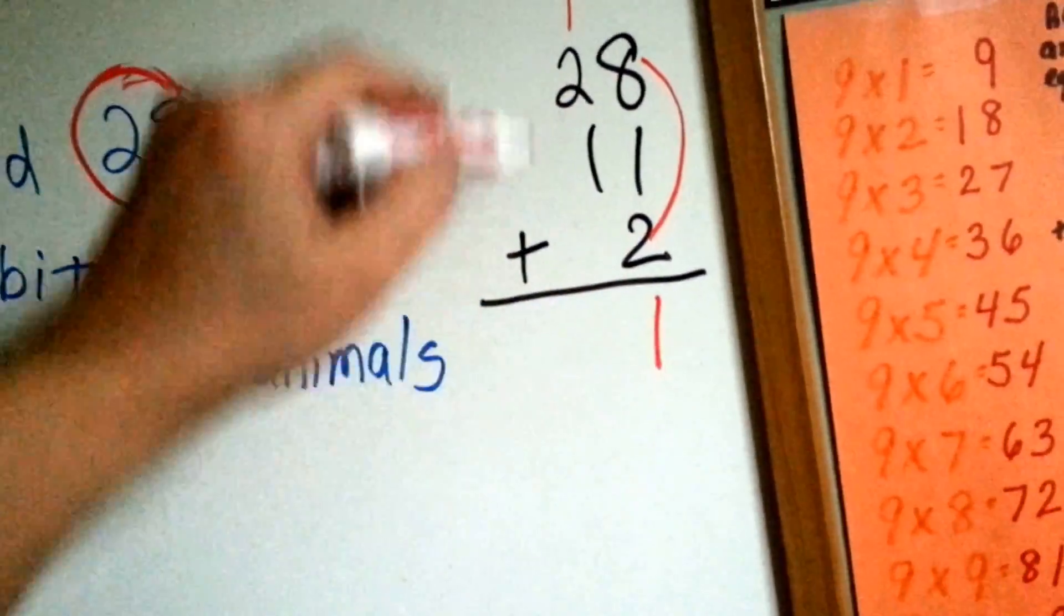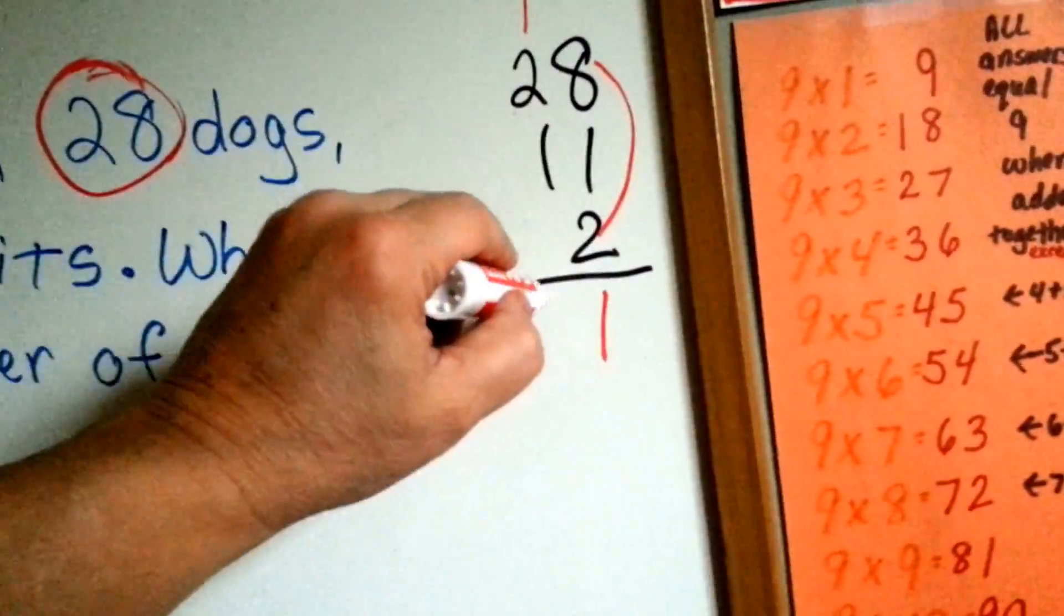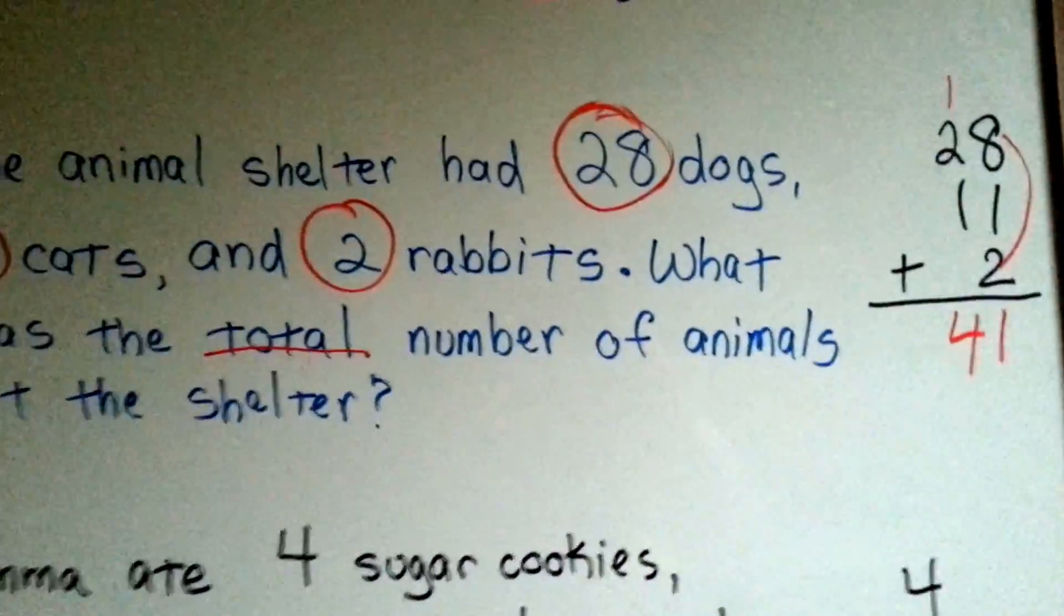Carry the one, put the other one down, one, two, three, four. They have forty-one animals up for adoption at the shelter.